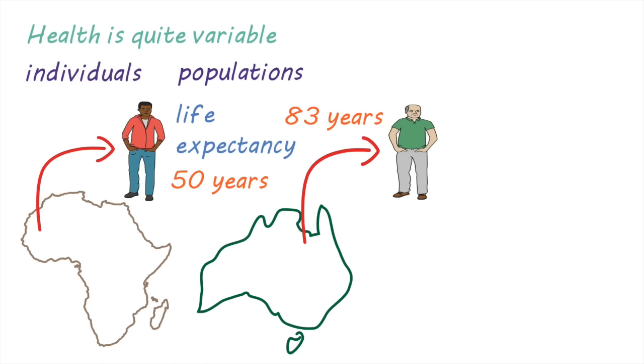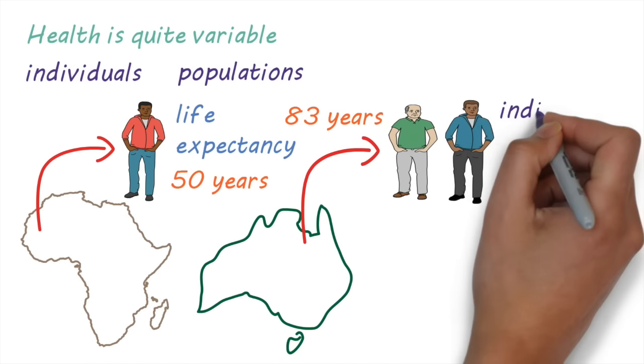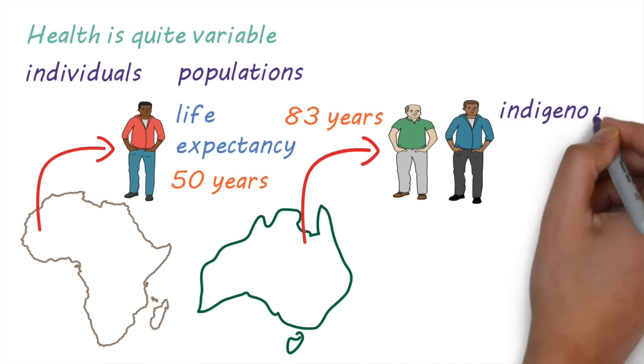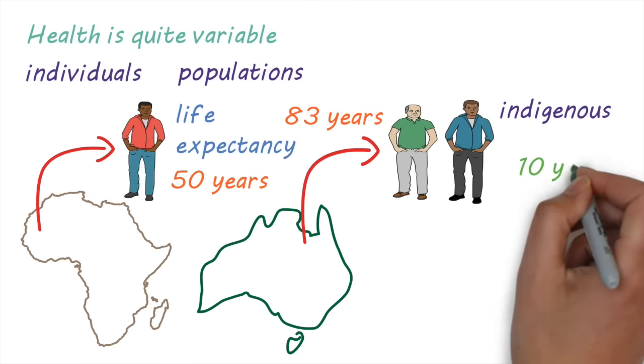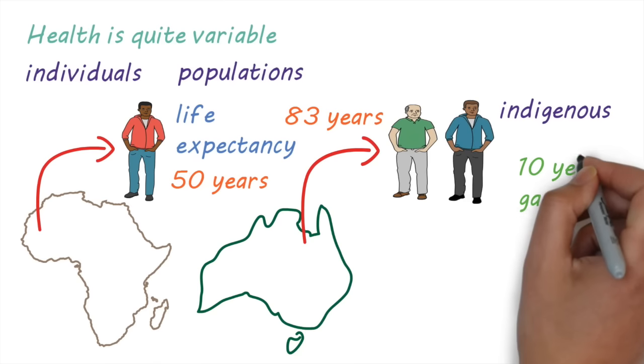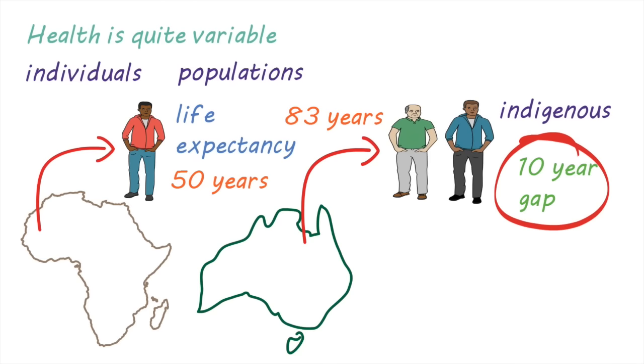But there are differences even within countries. For example, in Australia the life expectancy of Indigenous people is about 10 years lower than that of non-Indigenous people.